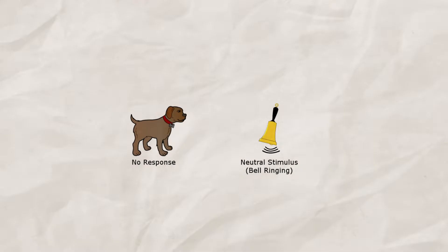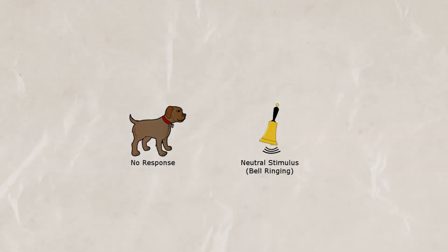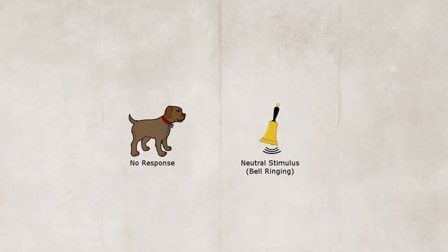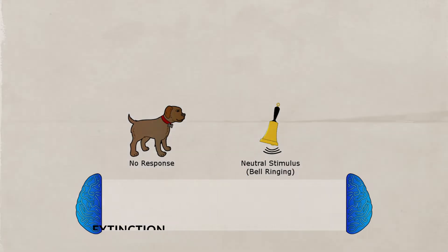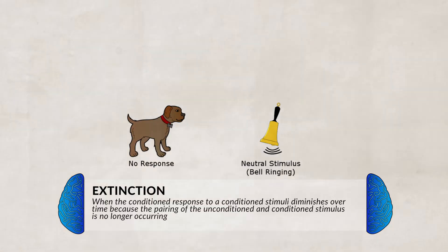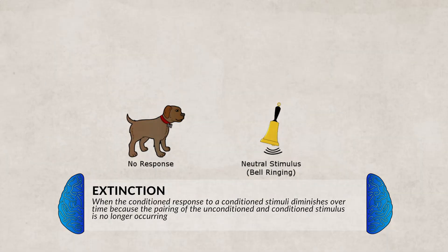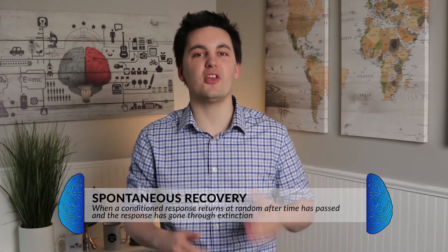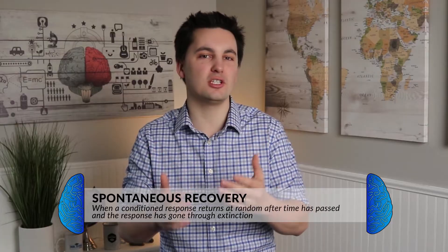While acquisition is the learning occurring, extinction is the opposite. Pavlov found that if the dog was continuously presented with the sound of the bell but no food came after it, the dog would salivate less and less. This is known as extinction — it occurs when the unconditioned stimulus is not paired with the conditioned stimulus anymore. Interestingly, Pavlov also discovered that if time passed without the dog hearing the bell, say an hour or so, the dog would start to salivate to the bell again. This is known as spontaneous recovery, the reappearance after a pause of an extinguished conditioned response.